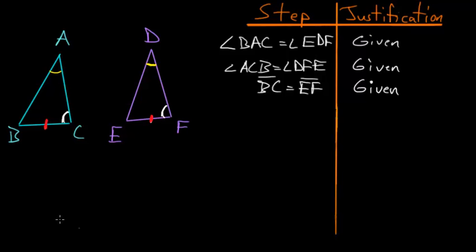We can start this proof by first making an assumption and then showing that this leads to some logical contradiction. So let's assume that side AC and side DF are not equal to each other, which essentially implies that one has to be bigger than the other. So let's just choose AC and say that it's bigger than DF.